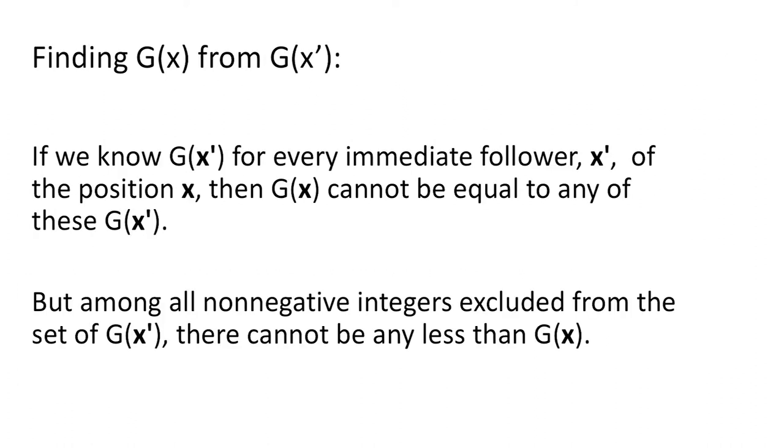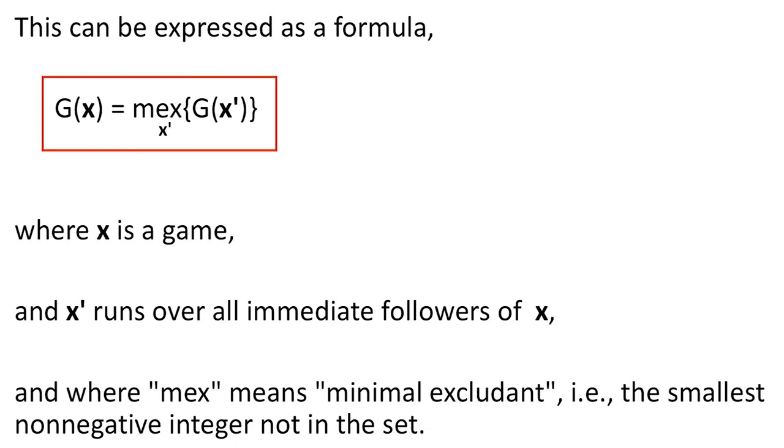So, if after we've found the Grundy numbers of all of the followers called x prime, then we can find the Grundy number of x. The method for doing so can be expressed as a formula, which states that the Grundy number of x is the mex over all x prime of the Grundy number of x prime, where here, MEX stands for the minimal excludent. It is the smallest number not in the specified set.